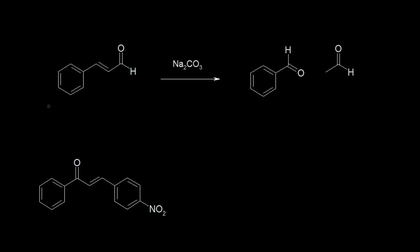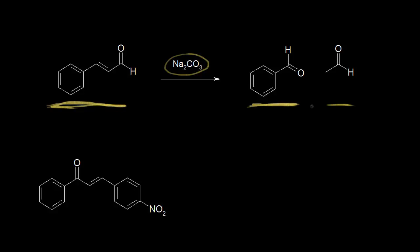Let's start with cinnamaldehyde right here. If we do a retroaldol reaction, the mechanism is pretty much the exact reverse of an aldol condensation. If we add a base like sodium carbonate, we're going to form benzaldehyde and acetaldehyde. Cinnamaldehyde is the molecule that gives cinnamon its smell, and benzaldehyde smells like almonds. You can start with a molecule that smells like cinnamon and end with a molecule that smells like almonds.